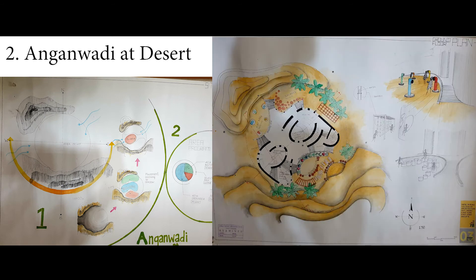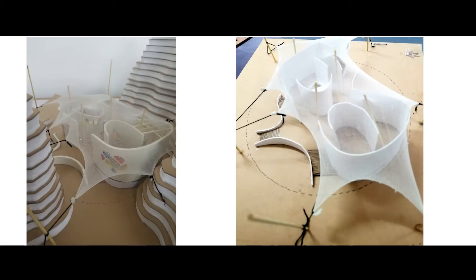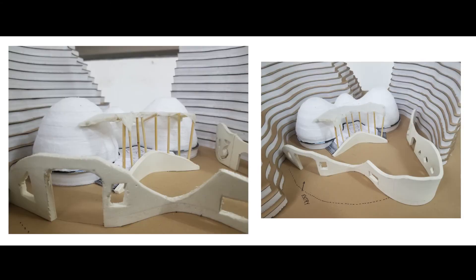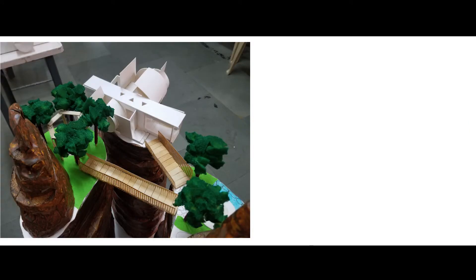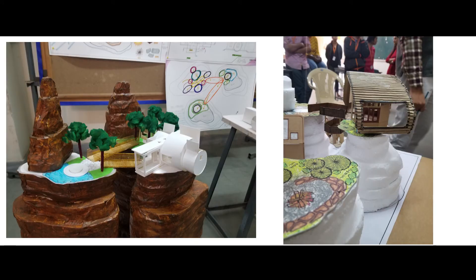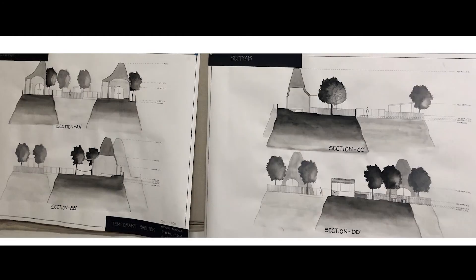Desert: a circular deserted area of 250 square meters with high sand dunes as the site context. We were assigned to design a primary school. Mountain: we were assigned three mountains as the site and were asked to design a campsite.